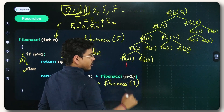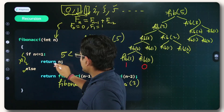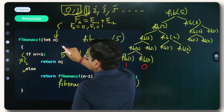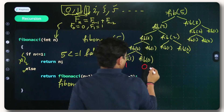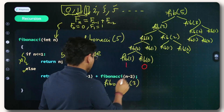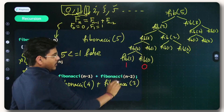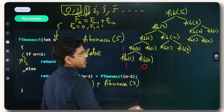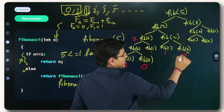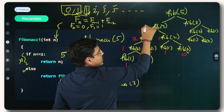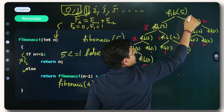Fib(1) returns 1 because if 1 ≤ 1 is true, it returns N which is 1. Fib(0) returns 0 because if 0 ≤ 1 is true, it returns N which is 0. So 1 plus 0 equals 1 for Fib(2). Then Fib(1) is 1, so 1 plus 1 equals 2 for Fib(3). Similarly, 1 plus 0 equals 1, and 1 plus 1 equals 2, giving 3 plus 2 equals 5. So the fifth term is 5.